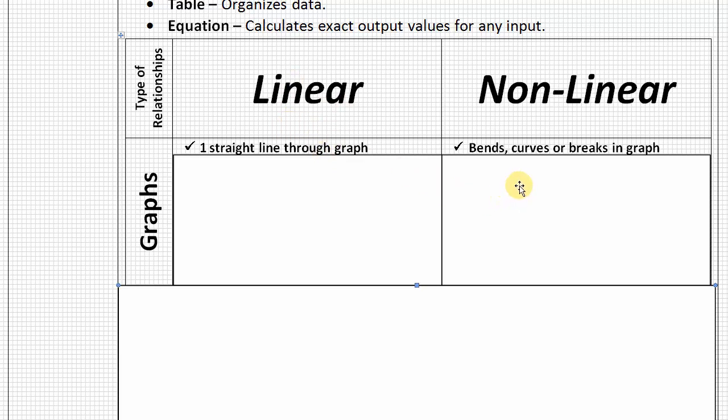If however, we're looking at a relationship and we see that it bends or curves or has any kind of break in the graph, then we'll know that it's nonlinear. It's not straight. So, here are some visual examples.